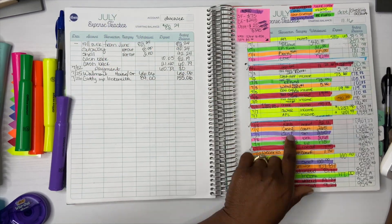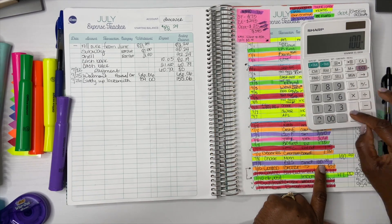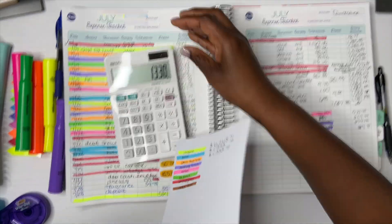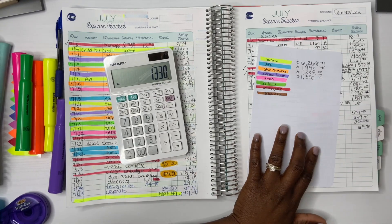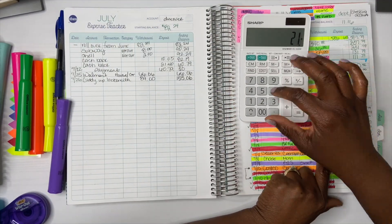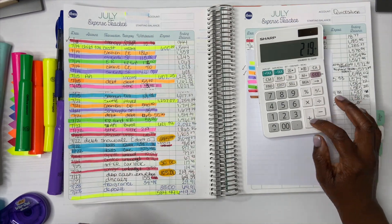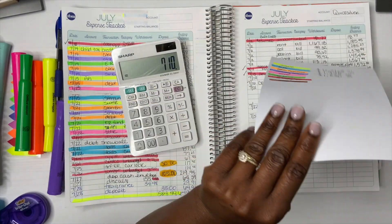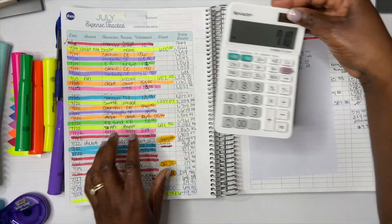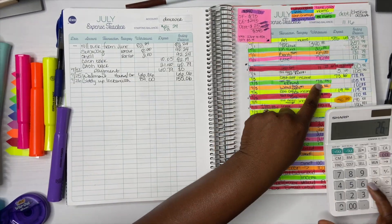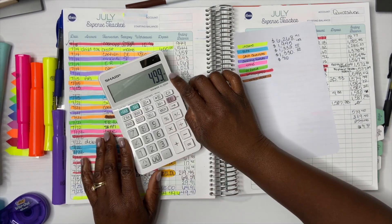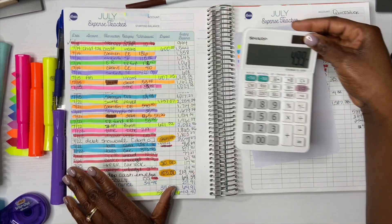All right, let's go ahead and do sinking funds. Sinking funds came up to $1,330. All right, let's do the tithe then. So tithe, $710. So we gave $710 in tithe. All right, so let's do emergency fund.